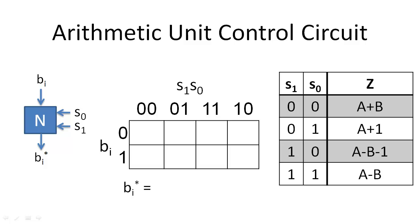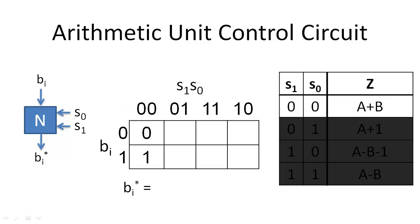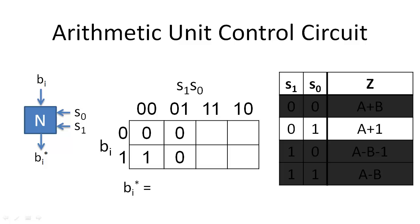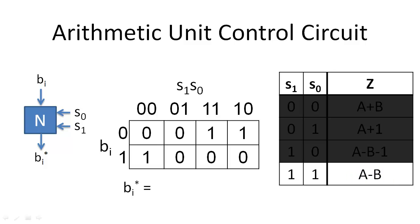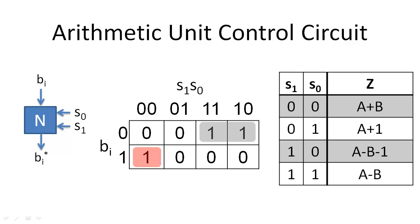When both selection inputs are 0, we want the output to equal B sub i. When the selection input bits encode 1, we want the output to be 0. When the selection inputs encode 2, we want the output to be the complement of B sub i. By using the K map, we find our minimal expression for the output.